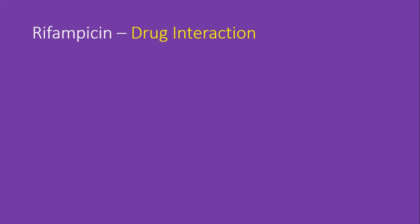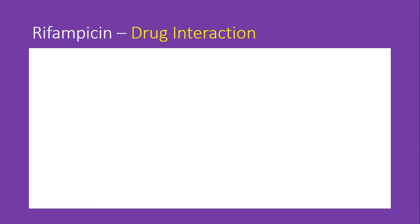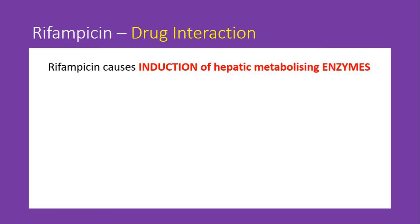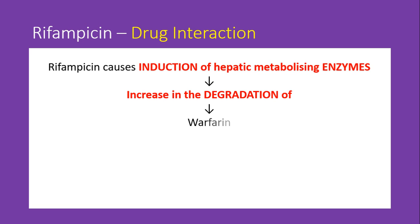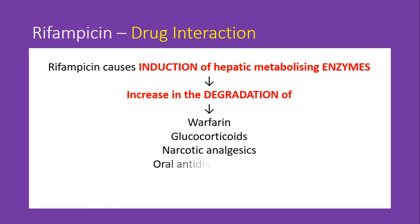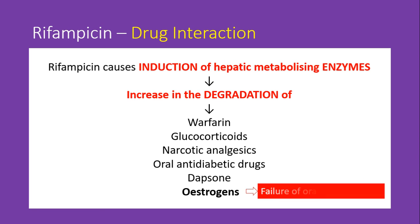Coming to the drug interactions with rifampicin: since rifampicin is a potent hepatic microsomal enzyme inducer, this leads to drug interactions by increasing the degradation of drugs metabolized by those enzymes. Examples of drugs with increased degradation include warfarin, glucocorticoids, narcotic analgesics, oral anti-diabetic agents, dapsone, and estrogens. Specifically, when rifampicin is given to a female individual on oral contraceptive pills, it increases the degradation of estrogen, reducing its therapeutic concentration and leading to failure of oral contraception.